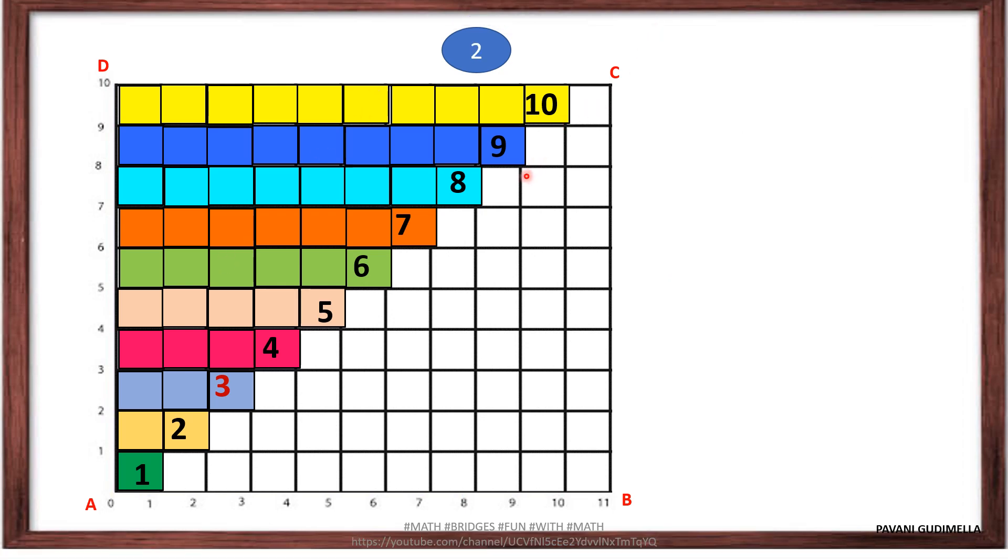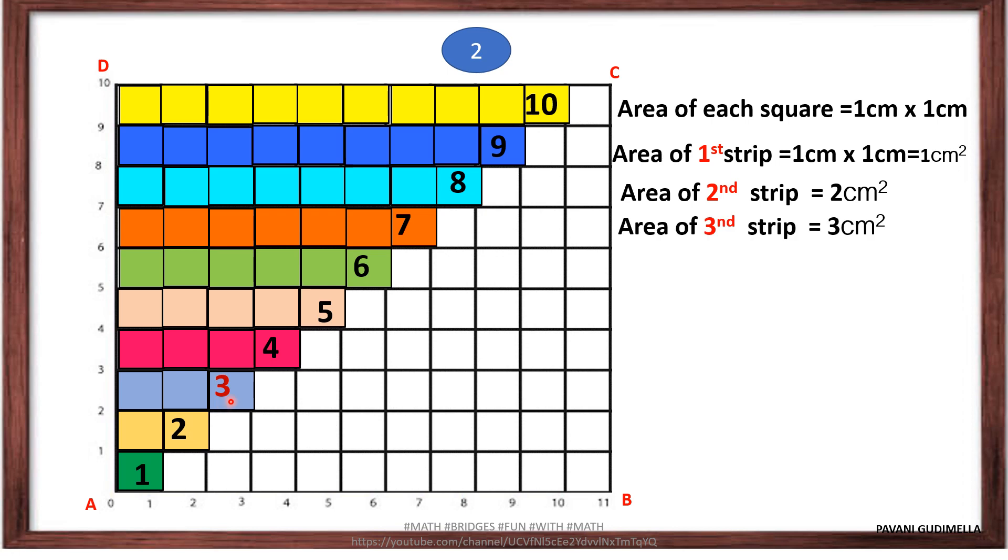Now consider this to be as the second one. Let's see how we are going to find this. We all know the area of each square strip is one square centimeter, one centimeter into one centimeter, which is one square centimeter. Similarly, area of the second strip, if you take it's two centimeter square, third strip three centimeter square, and so on.